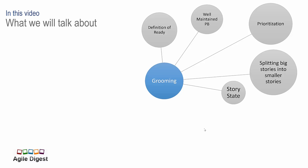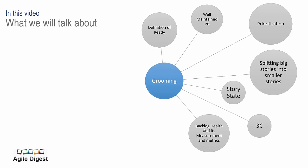In an Agile lifecycle, stories move from the very beginning to the end through different stages. We'll also talk about 3C — the acronym for the three core components of a user story — card, conversation, and confirmation. During grooming, we talk about each and every part of that 3C. We'll also talk about backlog health and its measurements and metrics — how we use grooming to increase backlog health and how we can measure it.